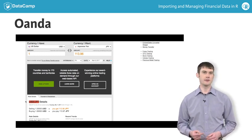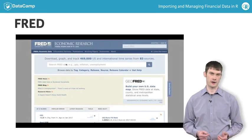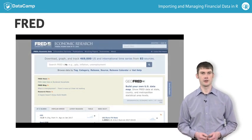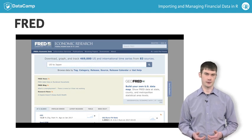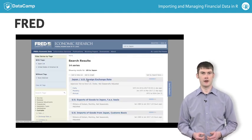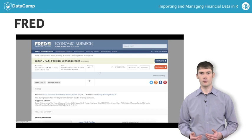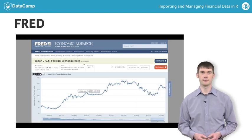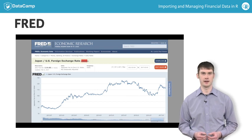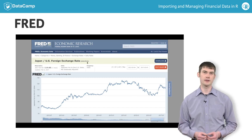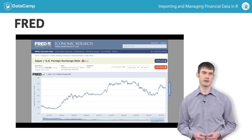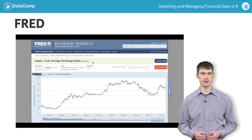Now let's try to find the US dollar to Japanese yen exchange rate on FRED. From the FRED homepage, you enter your search terms and click the search button. Note that FRED provides a different series ID for the different frequencies of the same series. For example, the series ID for the daily dollar-yen data is DEXJPUS, the series ID for the monthly frequency is EXJPUS, and the series ID for the yearly frequency is AEXJPUS.